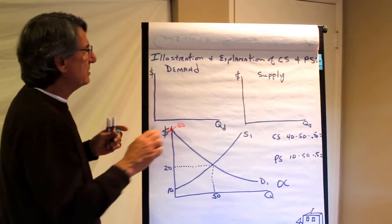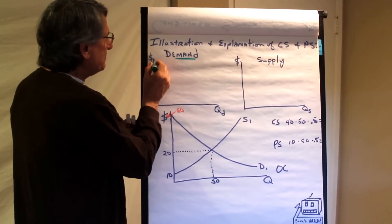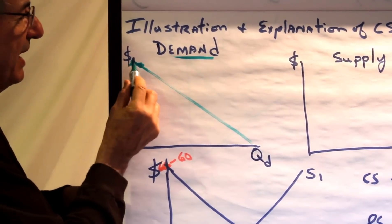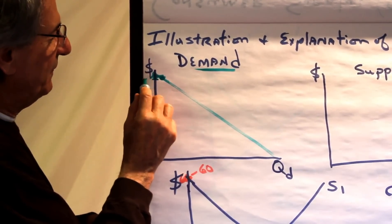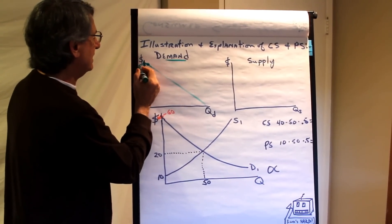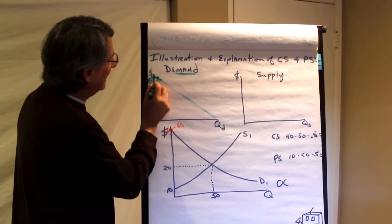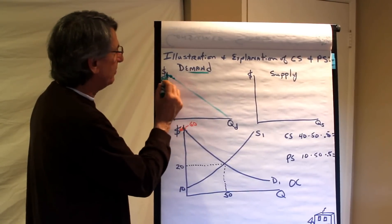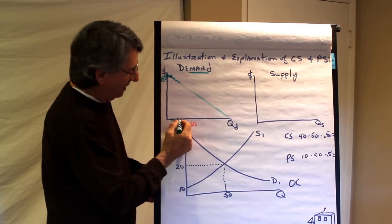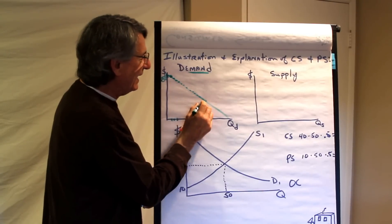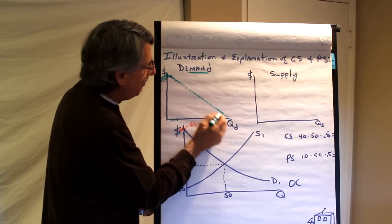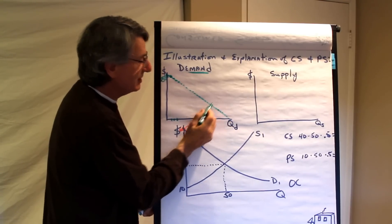Here's an illustration of consumer surplus. Here's demand. Every demand curve is a series of points. This point right there says at this price nobody wants to buy it. But at this price, say $60, one person wants it. At $59, somebody else wants it, so now there will be two. At $58, three people will want it. And if we could identify them, we could put the names of each of these people — that point represents the maximum that that person is willing to pay for that good.